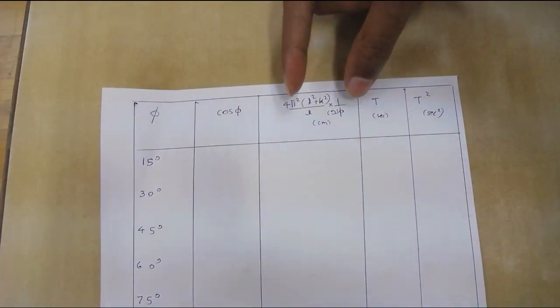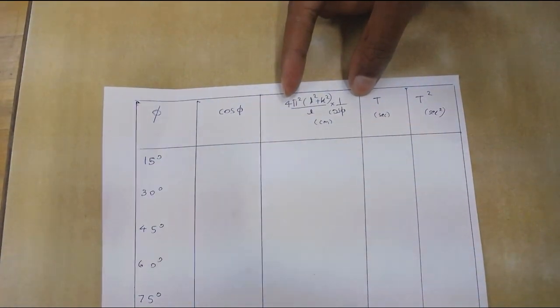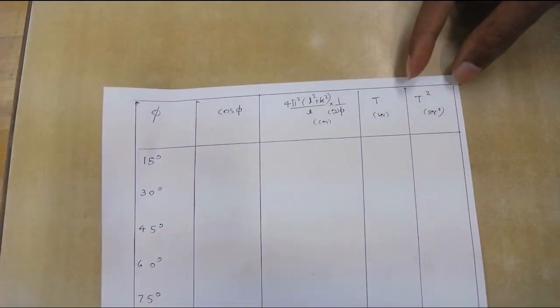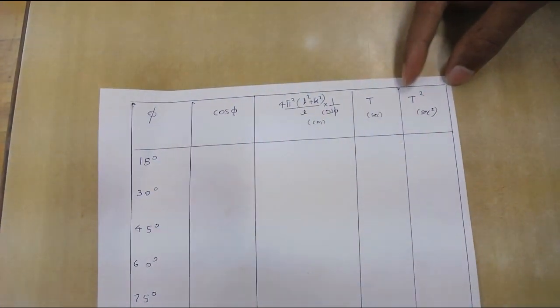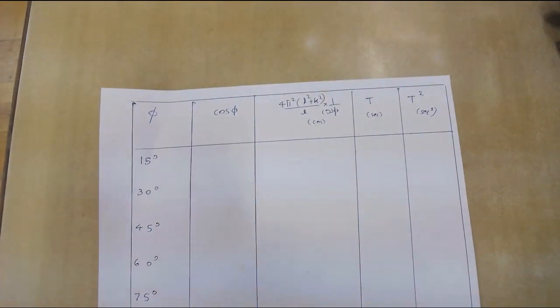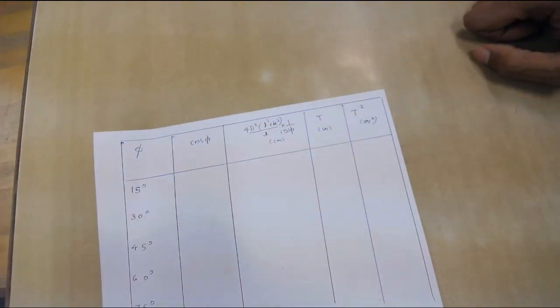Plot a graph between 4 pi square k square plus l square by l cos phi and t square using the data from this table. Analyze the graph and find value of g, radius of gyration.